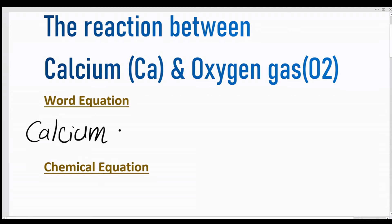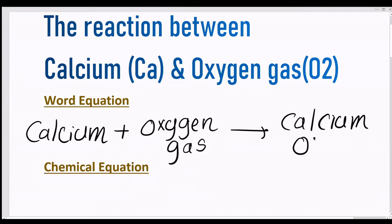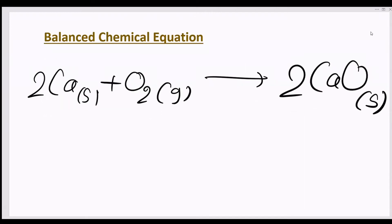Calcium plus oxygen gas gives us calcium oxide. Calcium oxide, also known as lime or more specifically quicklime, is a white or grayish white solid produced in large quantities by roasting calcium carbonate so as to drive off carbon dioxide. This is the balanced equation between calcium and oxygen gas.